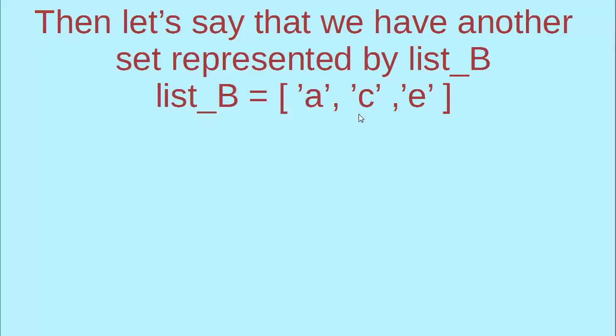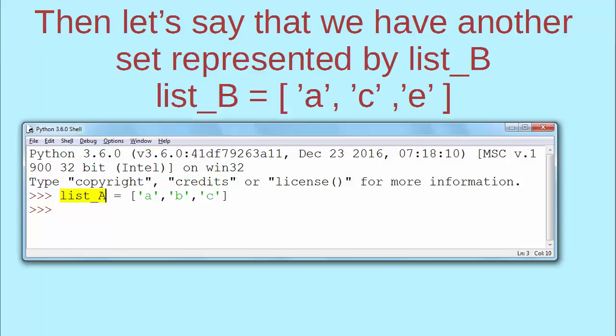List B has elements A, C and E. So let's implement that list into Python Idle. Let's say list B has elements A, C and E.